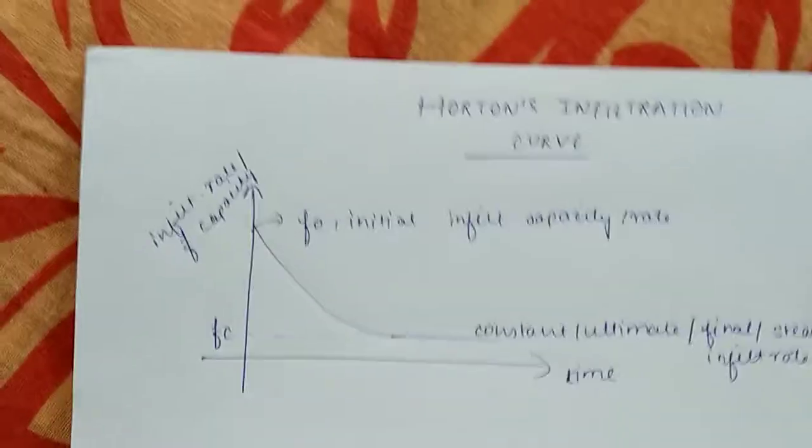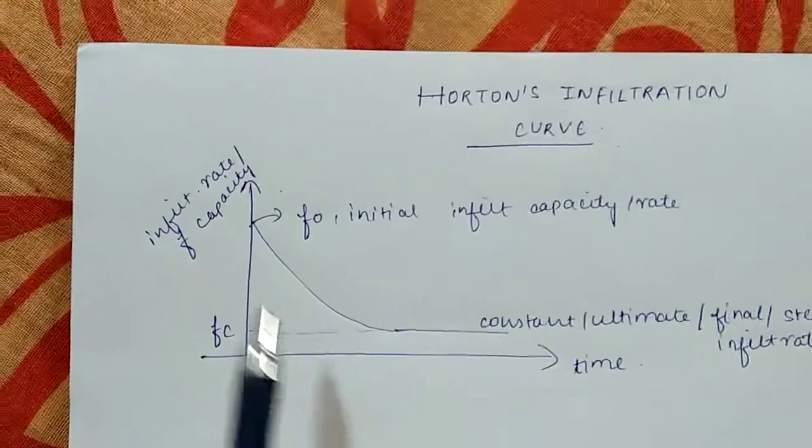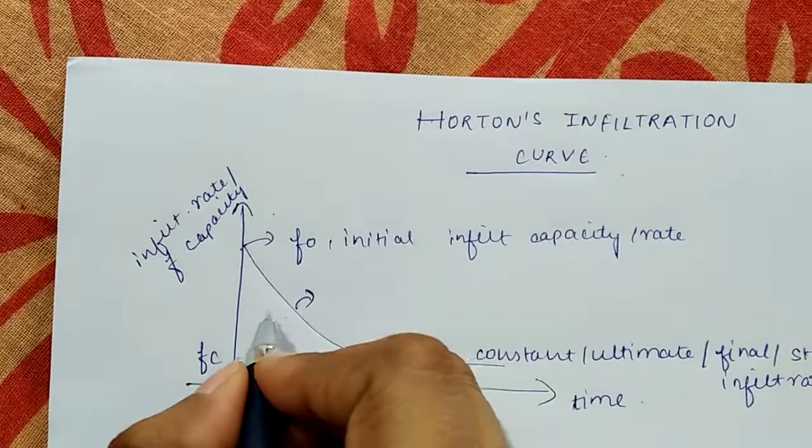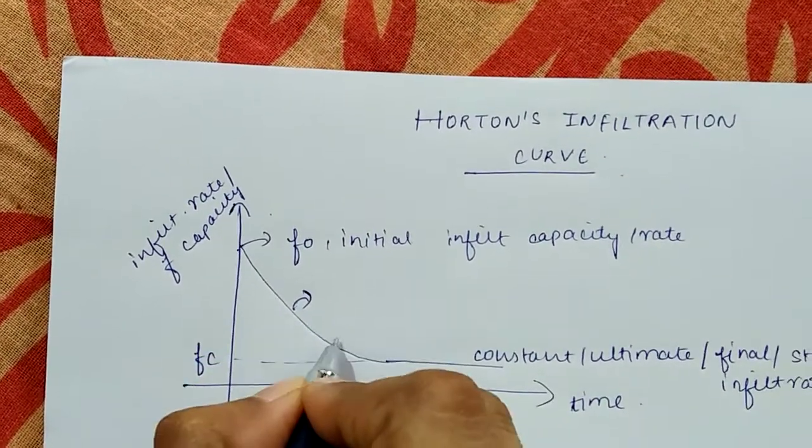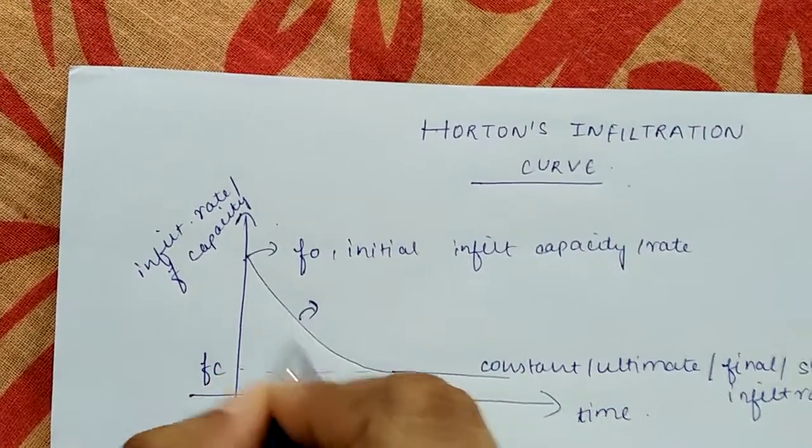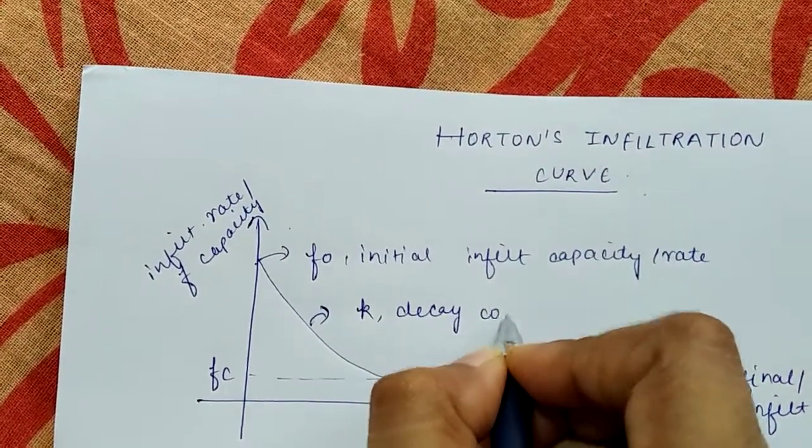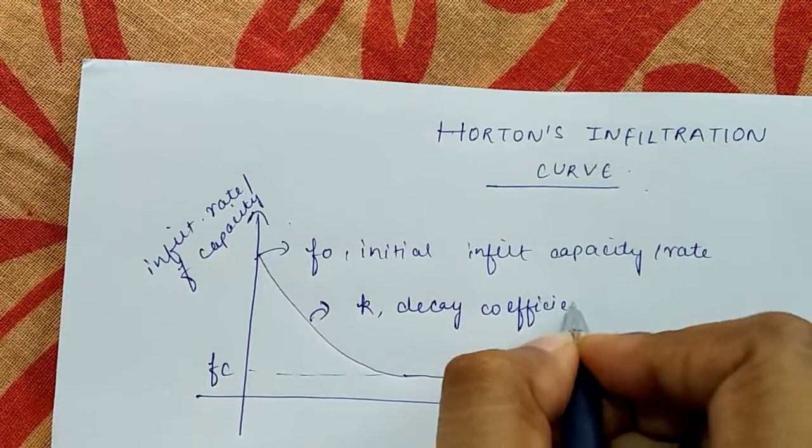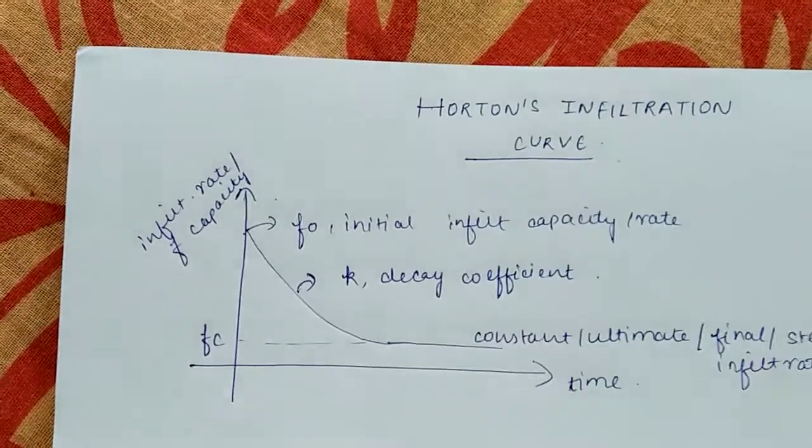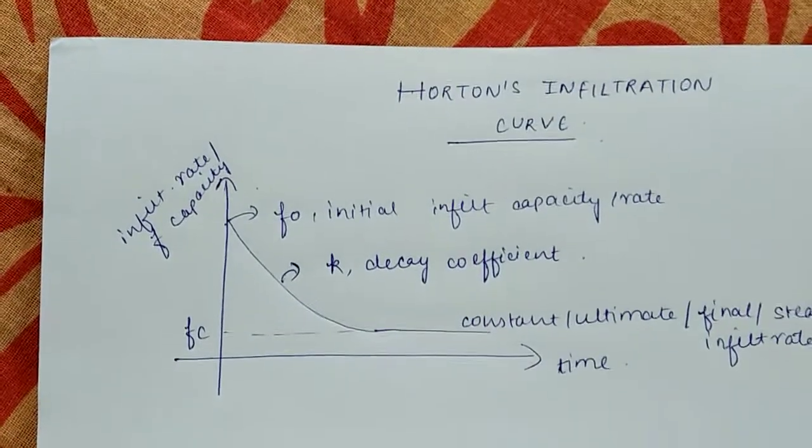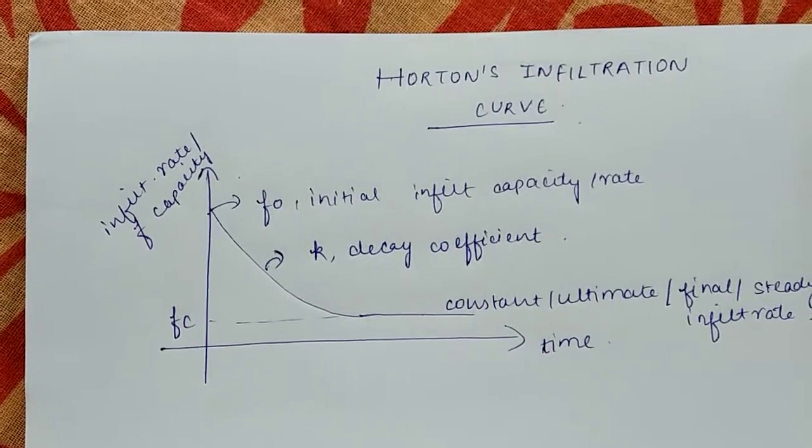Horton found that there is a decrease, and this decrease is exponential. The rate at which it is decreasing, or the slope of this graph, is called k, which is the decay coefficient. This equation or curve relates the infiltration rate with respect to time.